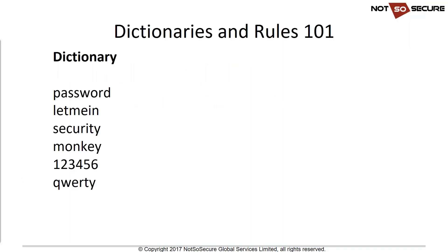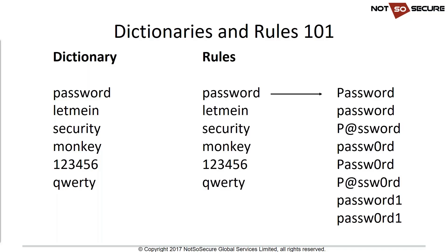A quick introduction to dictionary and rule attacks for password cracking. A dictionary contains many candidate words — the idea is to test whether any match your target password hashes to derive the cleartext. We can also apply rules to these passwords, massively increasing the number of candidates. Common things we as users do — letter-to-number substitutions, symbol substitutions — are encoded as rules to mangle dictionary words.